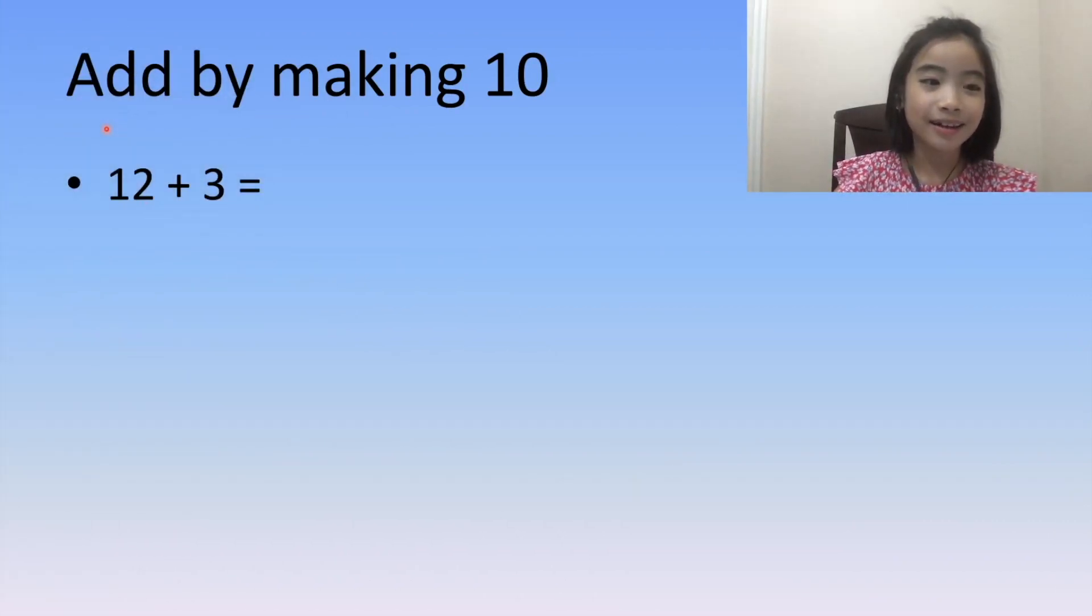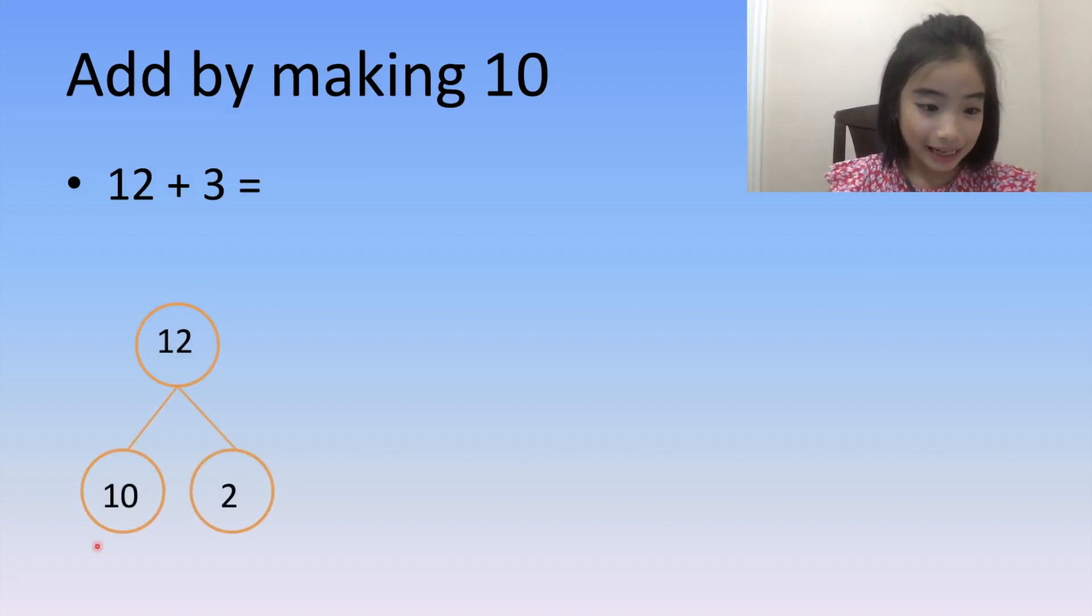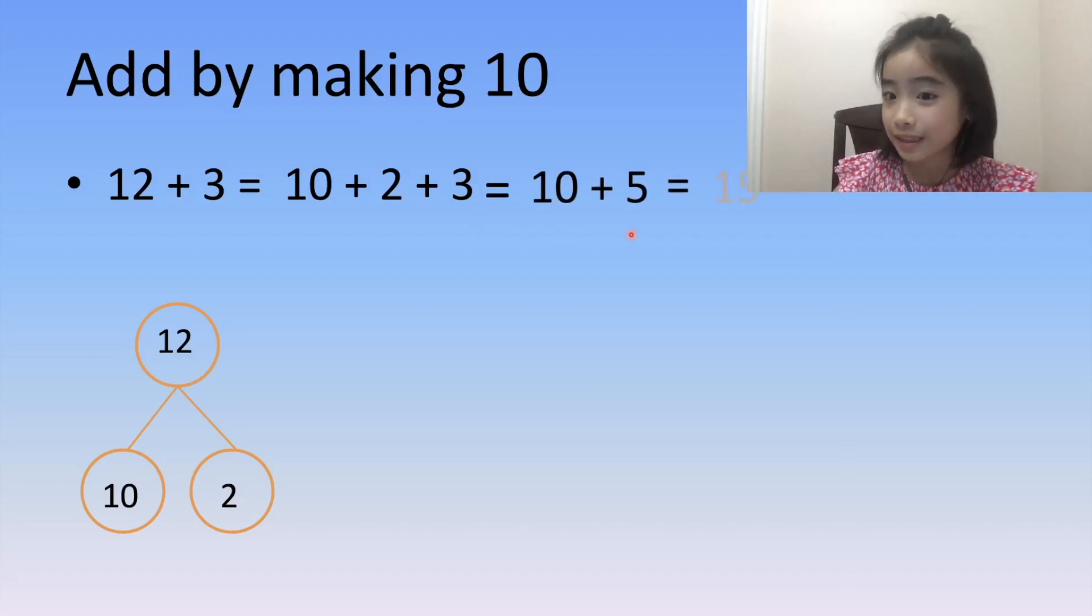Now let's do another example. The example is 12 plus 3. 12 can break into 10 and 2. So 12 plus 3 is equivalent to 10 plus 2 plus 3. 2 plus 3 equals 5. 10 plus 5 equals 15. So the answer is 15.